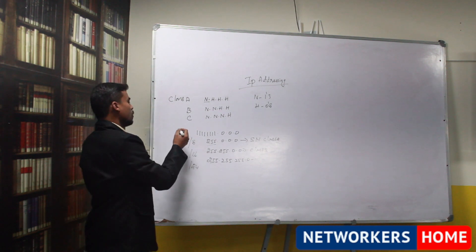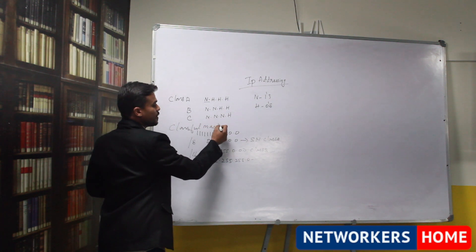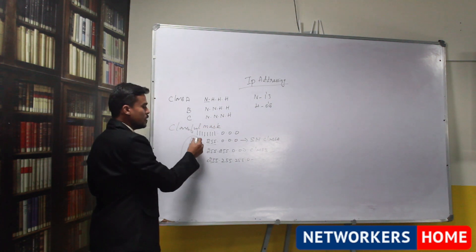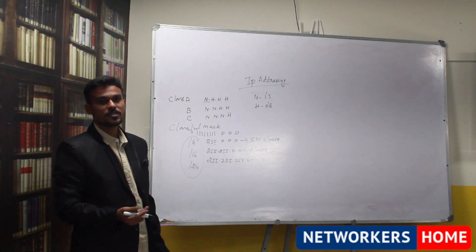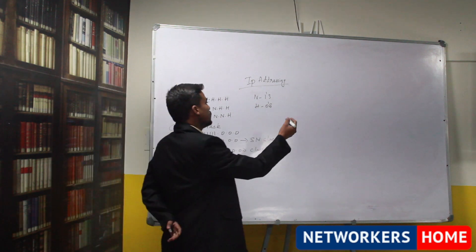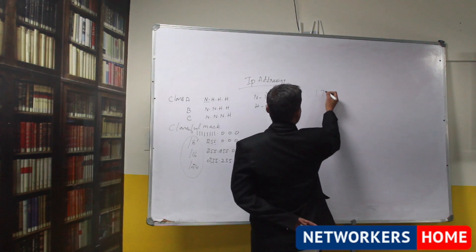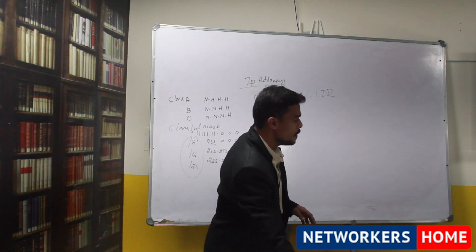These values are also known as classful mask where you can't subnet these three values. These three values are also known as fixed length subnet mask. Then which values we can do subnetting on? This is called as CIDR values, classless inter domain routing values.